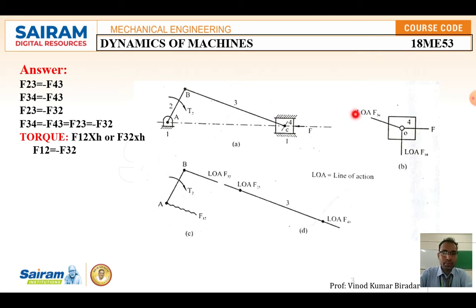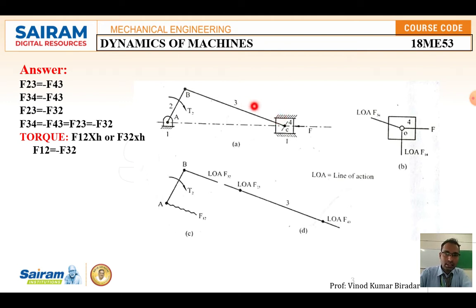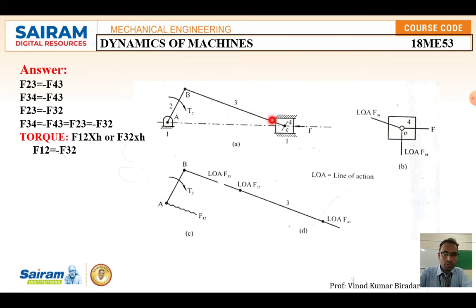LOA stands for line of action of a particular element, similar to an axis. Now I am constructing the free body diagram. The piston is present in the IC engine. One horizontal force is applied to the piston. One more force is acting on the piston from element three — that force is denoted as F34. F34 means element three is pushing element four, the piston. The line of action of F34 is drawn along element three.